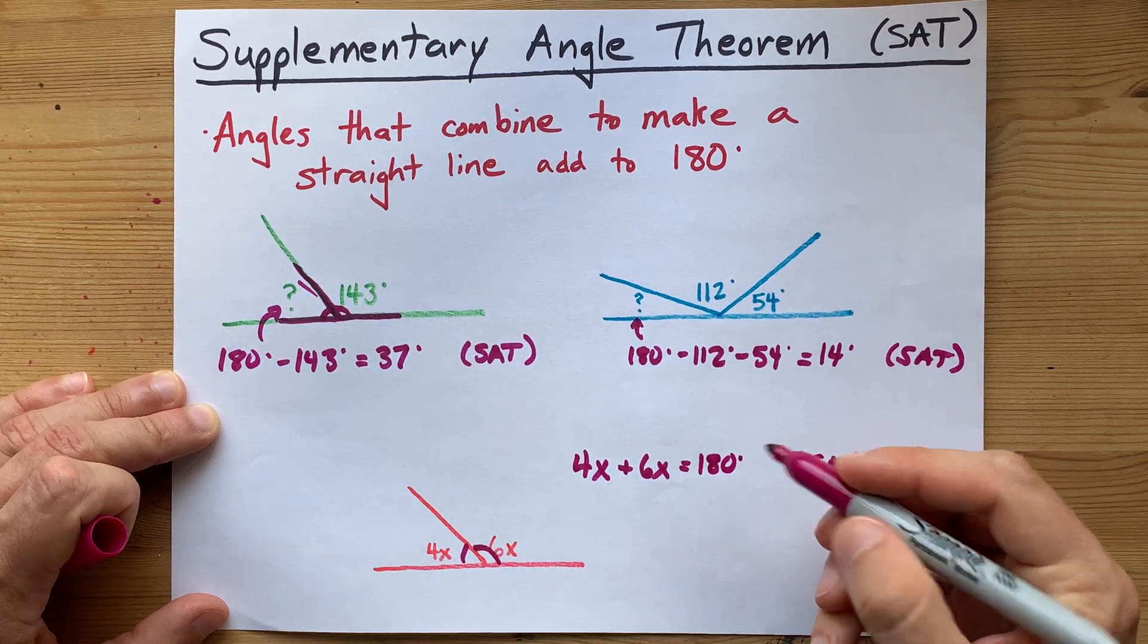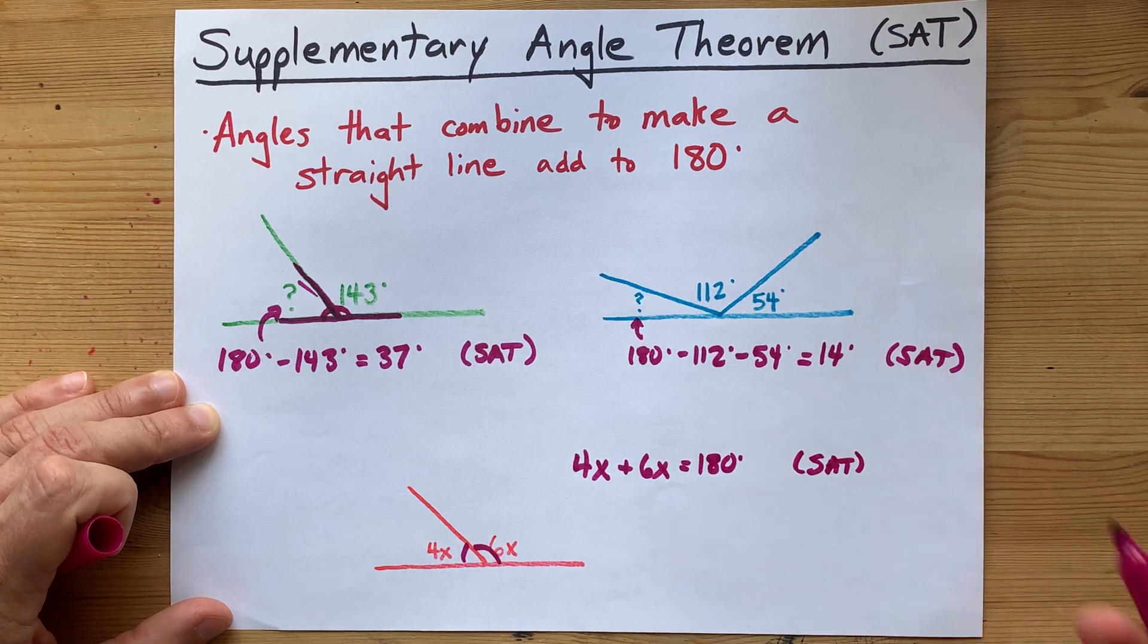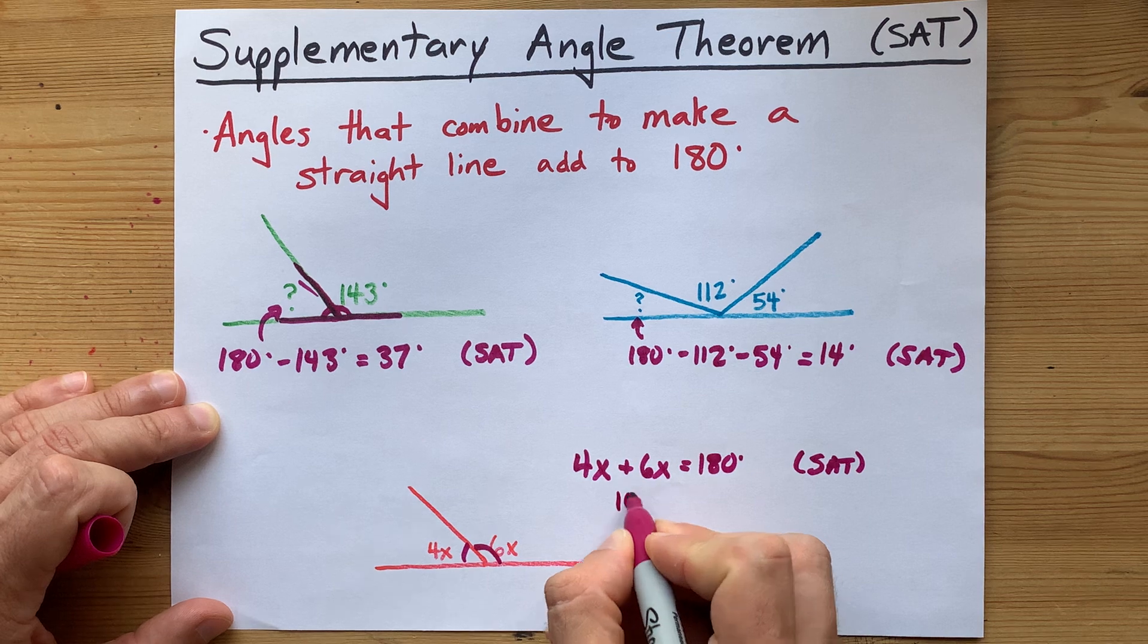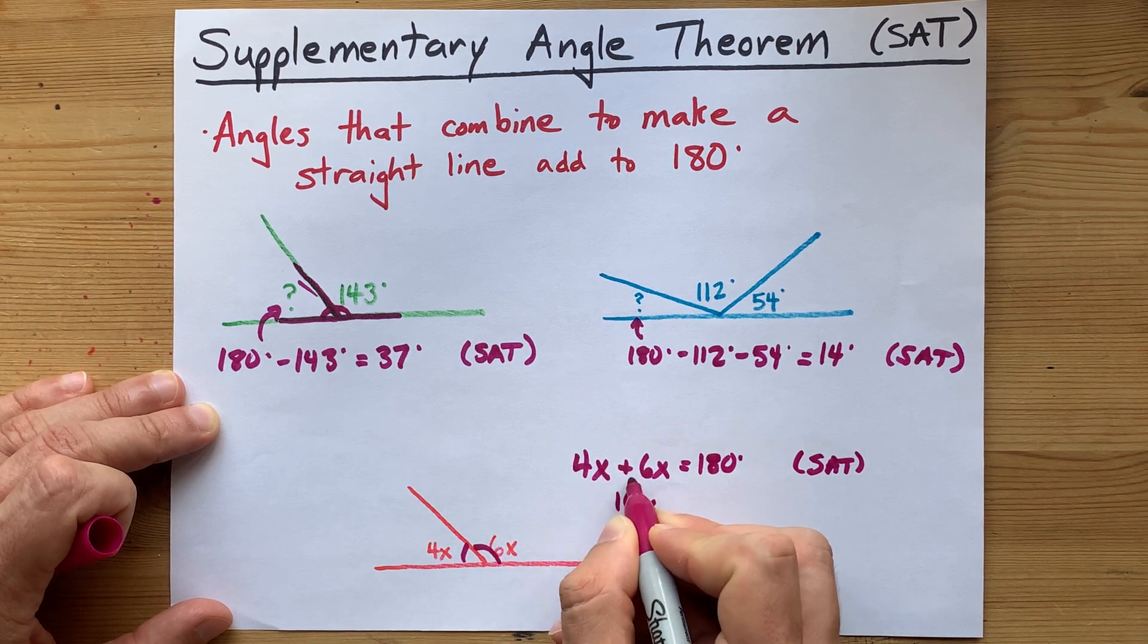Don't forget to cite it. And now we have an equation we can actually solve. 4X plus 6X gives me 10X total.